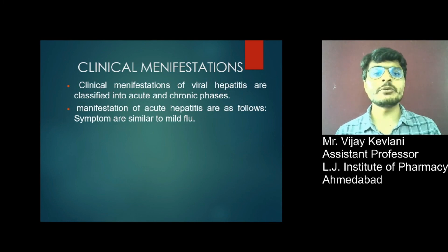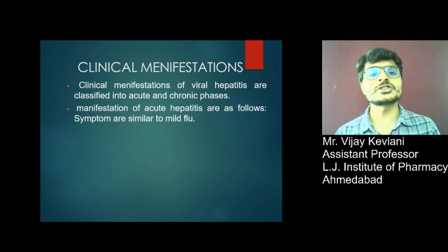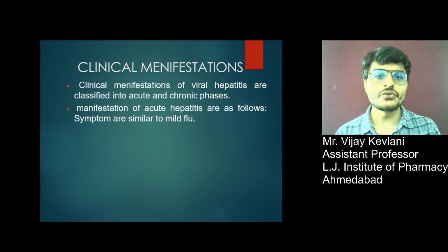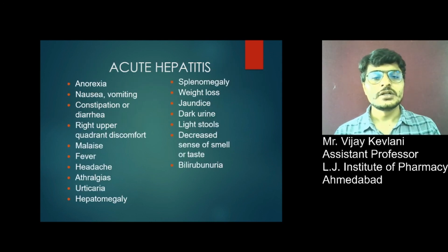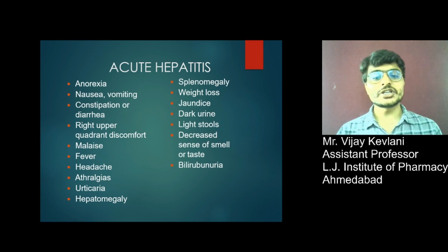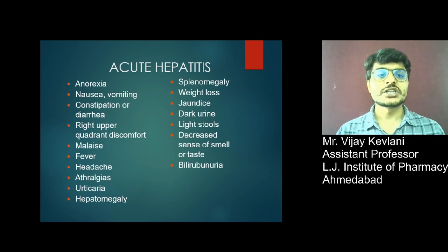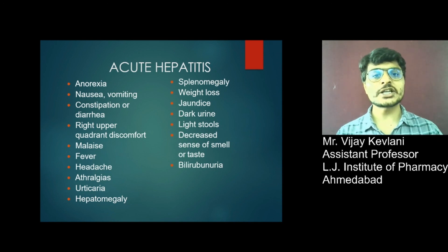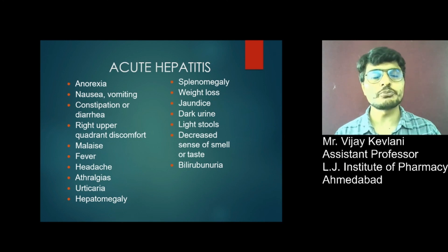Clinical manifestations of viral hepatitis are classified into acute and chronic phases. Manifestations of acute hepatitis are similar to mild flu and include anorexia, nausea, vomiting, constipation or diarrhea, right upper quadrant discomfort, malaise, fever, headache, arthralgia, hepatomegaly, splenomegaly, weight loss, jaundice, dark urine, light-colored stool, and decreased sense of smell or taste.